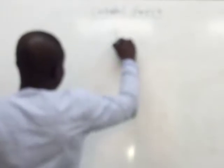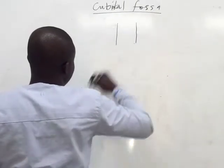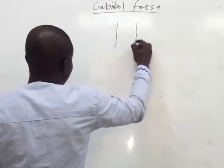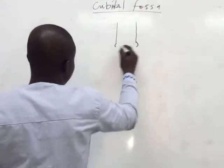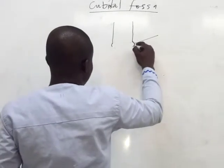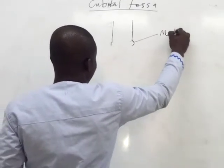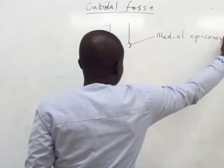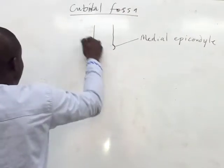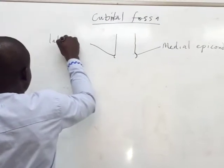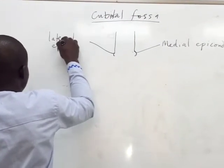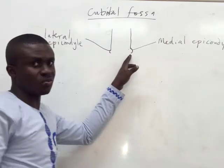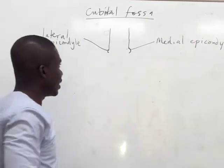Let's just sketch out something like this. These are the epicondyles. We have to know that this is the medial epicondyle. This would be the lateral epicondyle. We are aware that the medial epicondyle is more prominent than the lateral epicondyle.